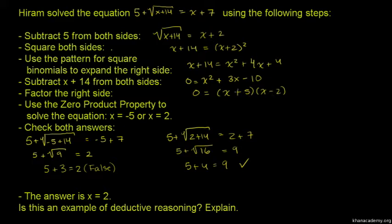Solving these equations: x + 5 = 0 gives x = -5, and x - 2 = 0 gives x = 2. Now we need to check both answers.